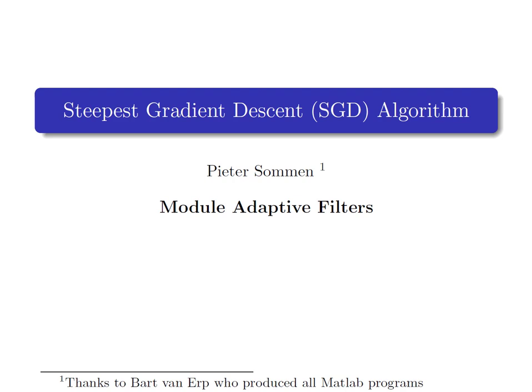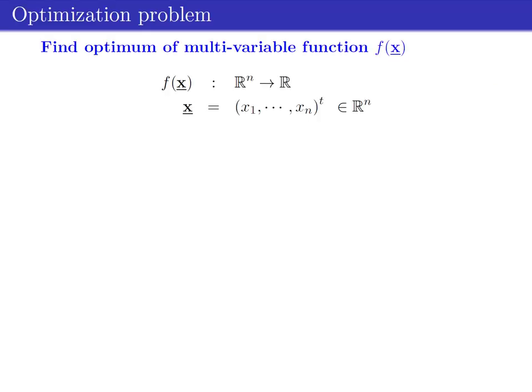It works according to the gradient, which is why it's also called gradient descent. However, gradient descent should not be confused with the method of Steepest Descent for approximating integrals. While the Steepest Gradient Descent method is not commonly used in practice due to its slow convergence rate, understanding its convergence properties can lead to a better understanding of many more sophisticated optimization methods.